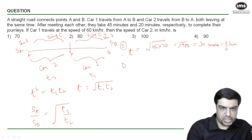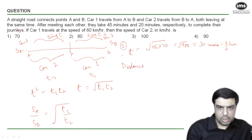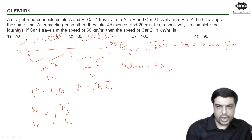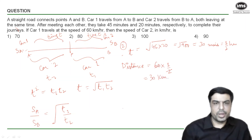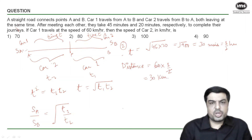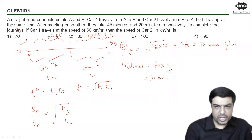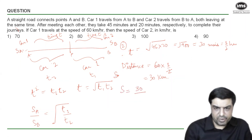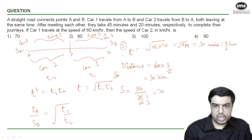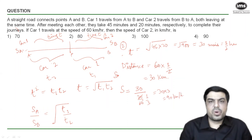This distance AP of 30 km was covered by car two in the second stretch, taking 20 minutes (= 1/3 hour). So speed of car two = distance ÷ time = 30 ÷ (1/3) = 30 × 3 = 90 km/h. Using Formula 1 got us the answer faster than solving equations directly.